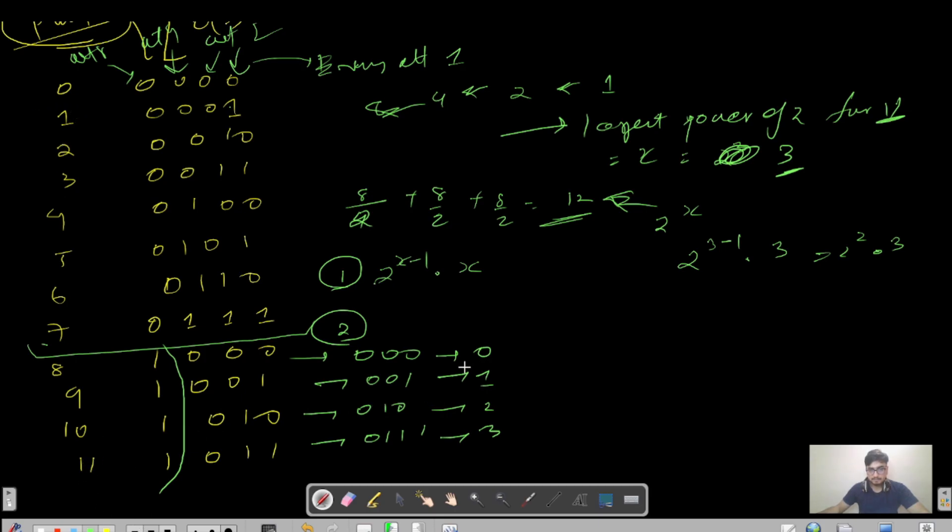If we count set bits, in the last column there are four set bits, which is 8 divided by 2. In the second last column, again four, which is 8 divided by 2. In the third last column there are four zeros and four ones, again 8 divided by 2. The largest power of 2 for 11 is x equals 3. If we sum these, we get 4 times 3 equals 12. We can represent this as 2 power x times x, which is 2 power 3 minus 1 times 3. So the first general formula is: find the largest power of 2, compute 2 power x minus 1 times x.